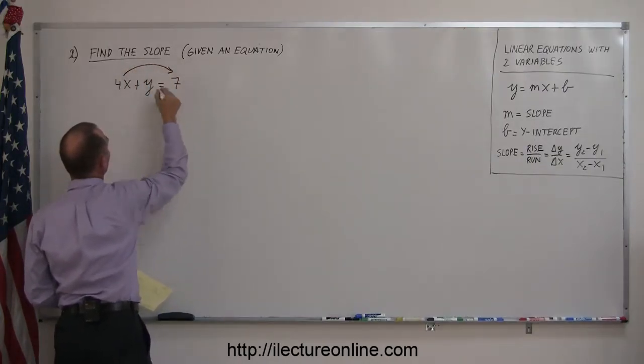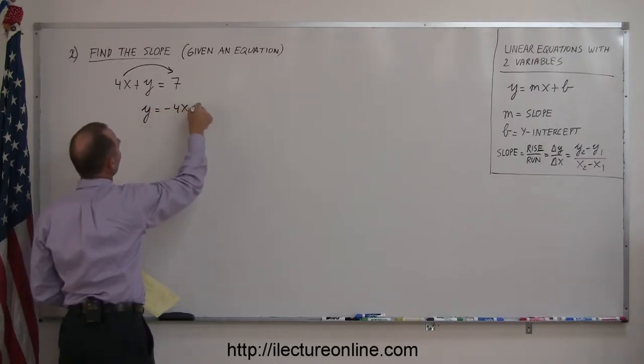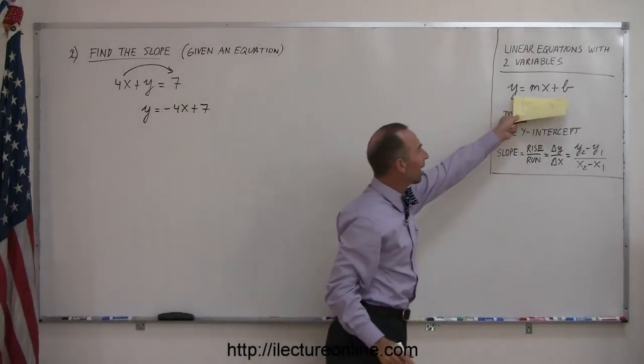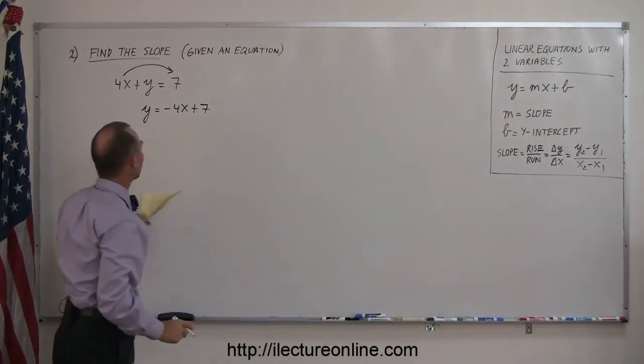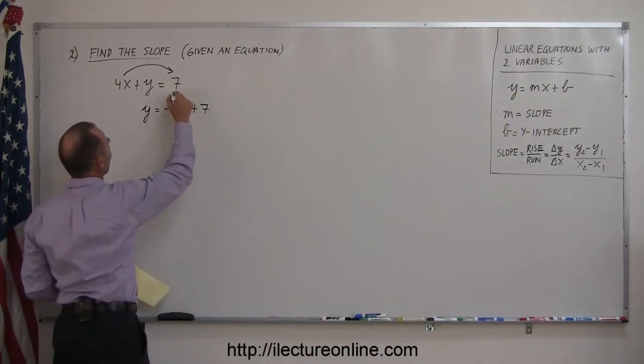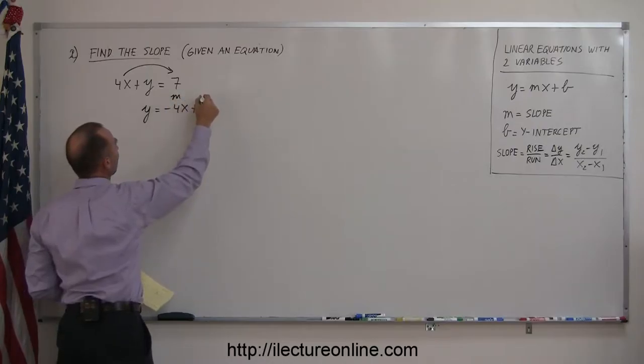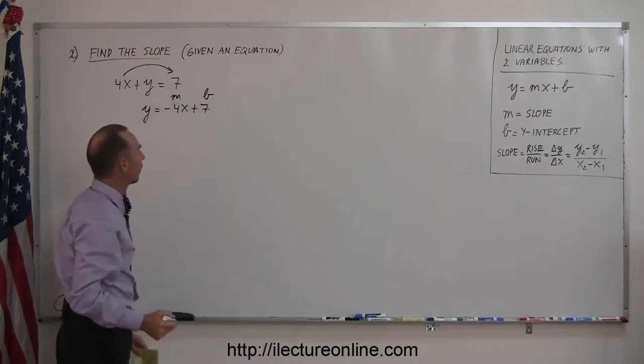We want to move that across over here, so it end up being y equals minus 4x plus 7. Now, we check, and yes, it looks exactly the same as over here. So, this here is the slope m, and this is the intercept b, the y-intercept.